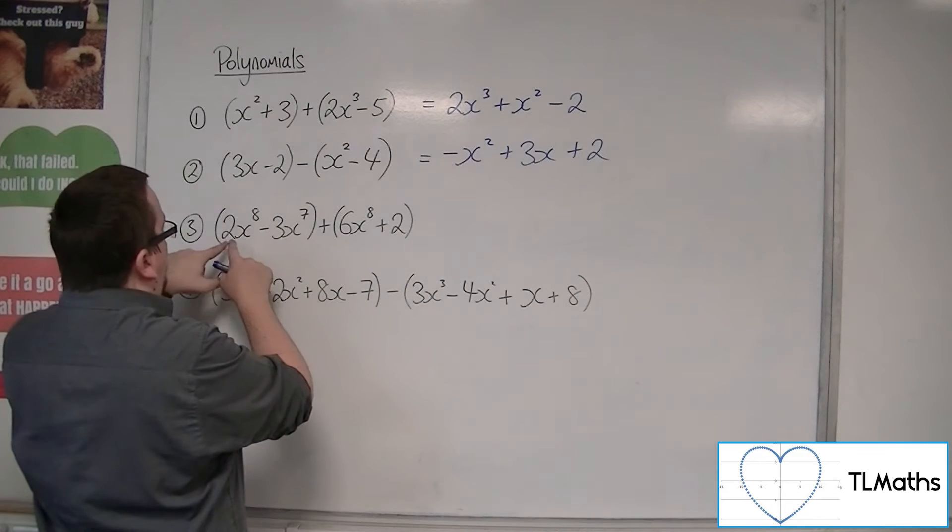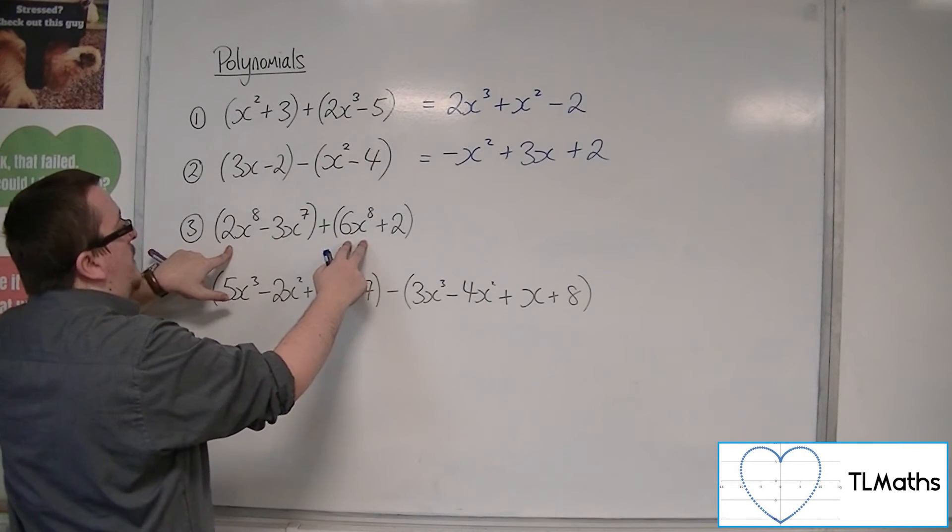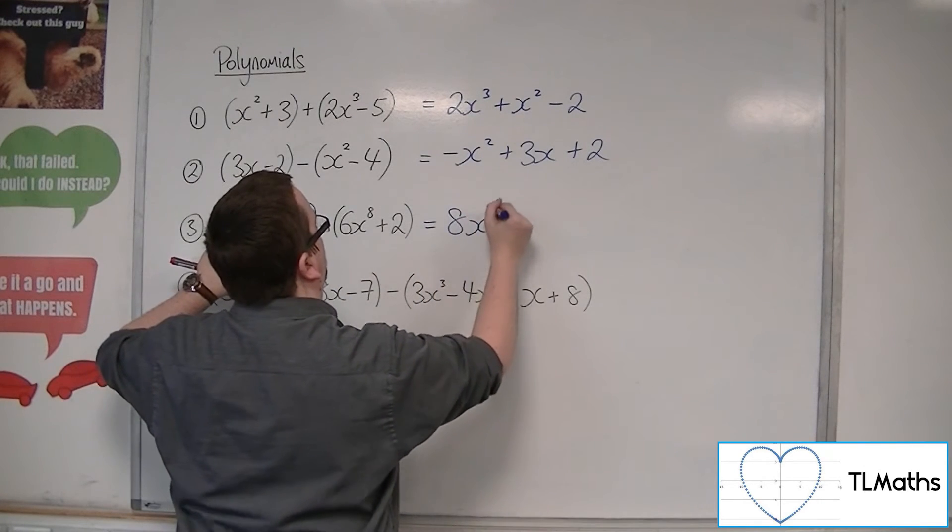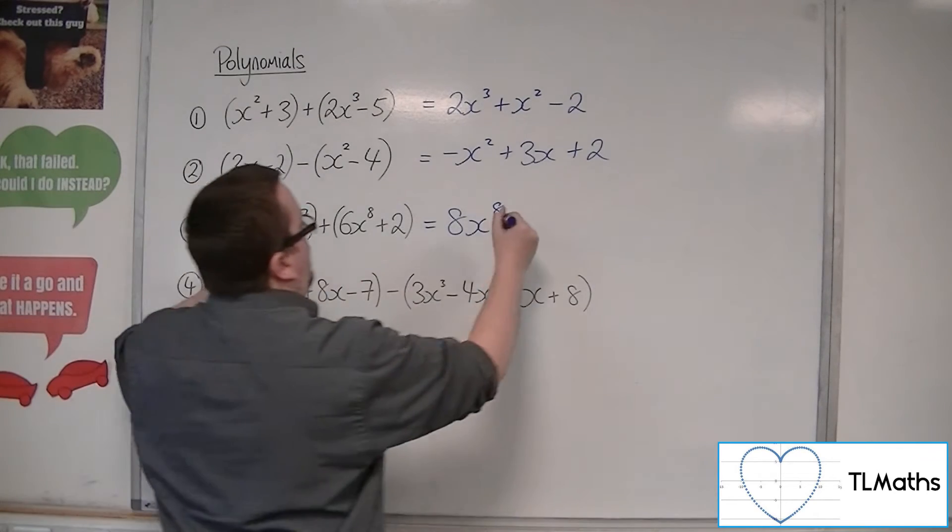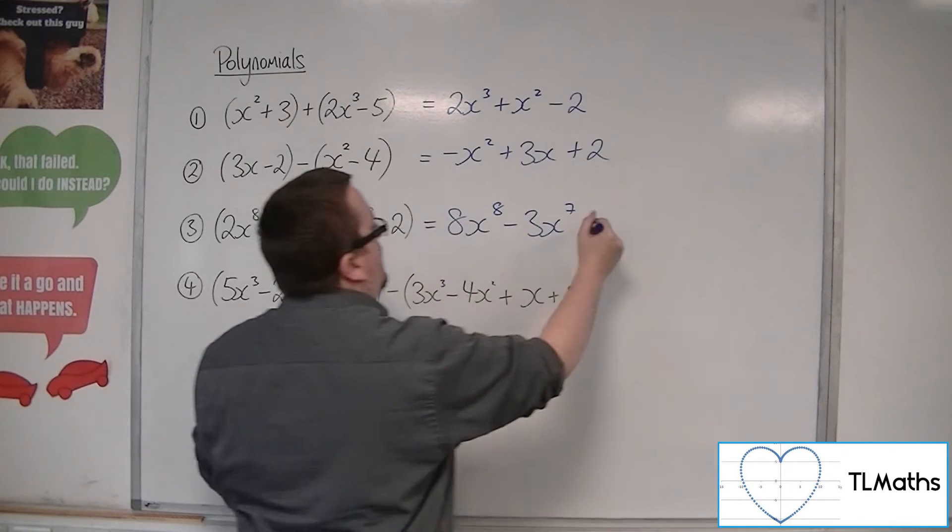So I've got 2x to the 8 and a 6x to the 8. So they can combine to make 8x to the 8. Then we've got minus 3x to the 7. And then we've got the plus 2 on the end.